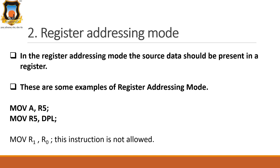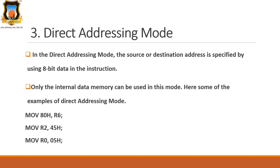Note that MOV R1, R0 is not allowed in register addressing mode. The third addressing mode is direct addressing mode. Here, the address of the source data is given as an operand. Only the internal data memory can be used in this mode. Examples: MOV 80H, R6; MOV R2, #45H; MOV R0, 05H. Observe that the hash sign is not given for these numbers, meaning they are not data — they are considered as addresses of data.